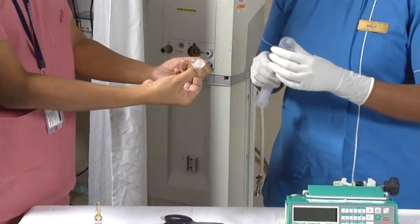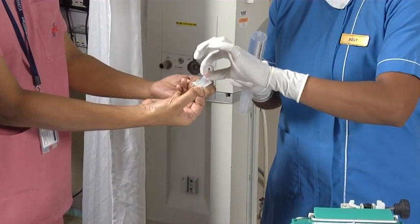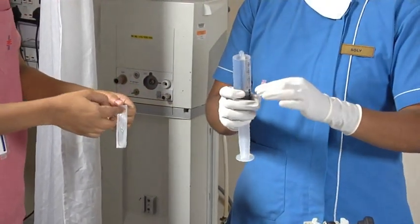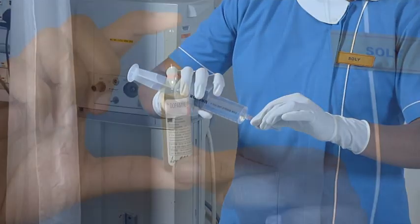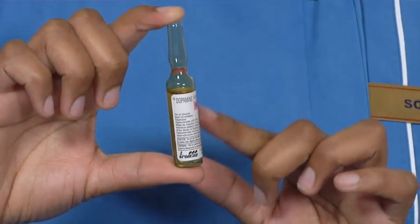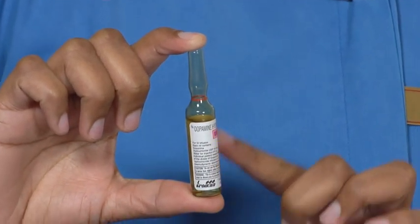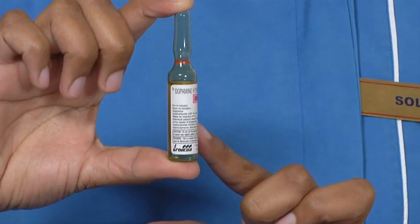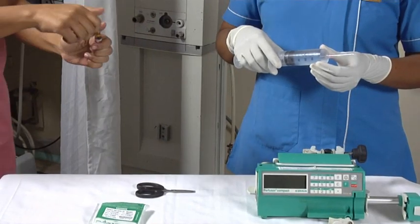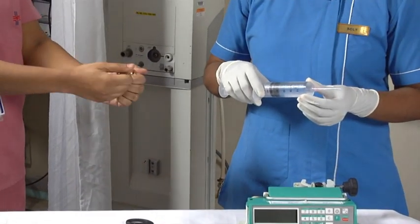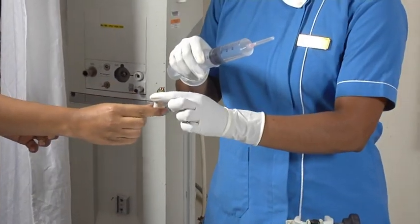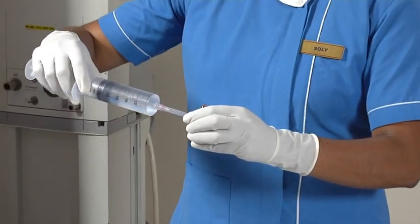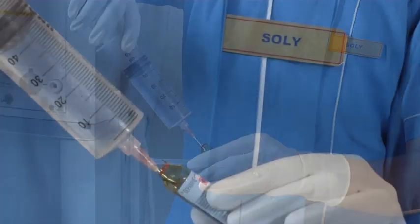Then, we will take an antiseptic needle from its cover, and attach it to the syringe. The doctor's order was to give injection dopamine to the patient. One ampoule dopamine contains 5 ml, which is 200 mg. Now, we will break the upper part of the ampoule carefully. We insert the needle inside the dopamine bottle, and take out 5 ml solution completely.